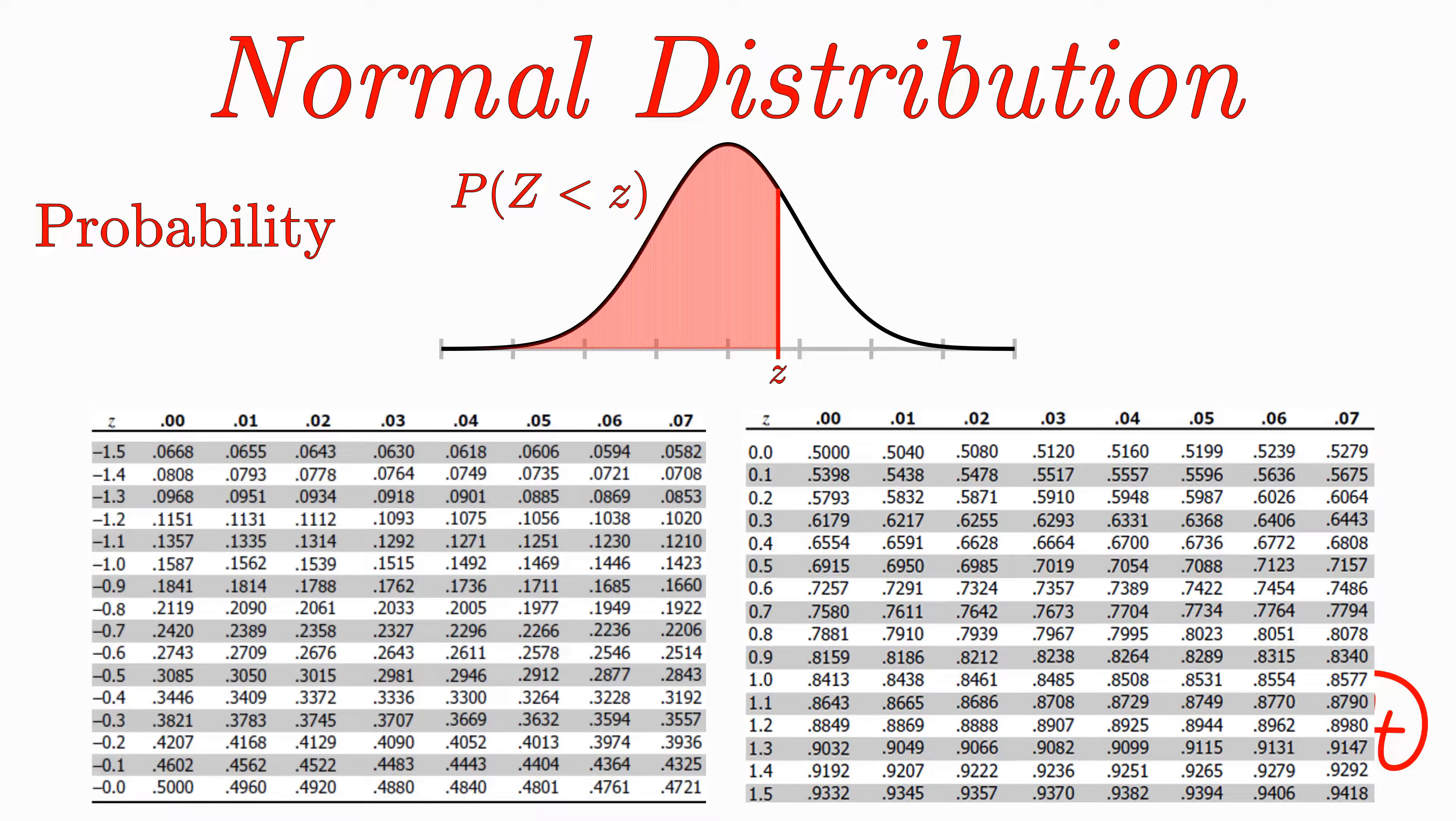And one last quick note, it's also important to make sure you are using the correct chart based on whether you have a negative or positive z-score. The one on the left is for negative z-scores, or values below the mean, and the one on the right is for positive z-scores, or values above the mean.